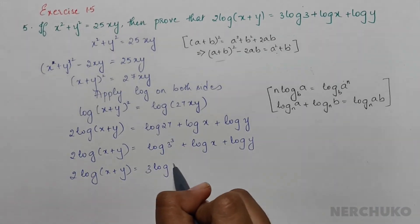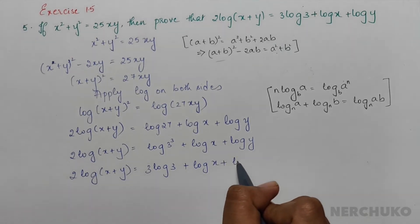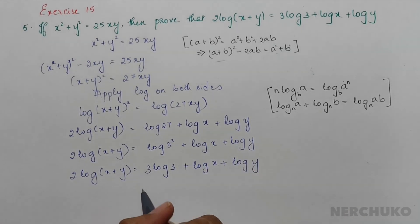Therefore, 2log(x+y) = 3log3 + logx + logy. Hence proved.